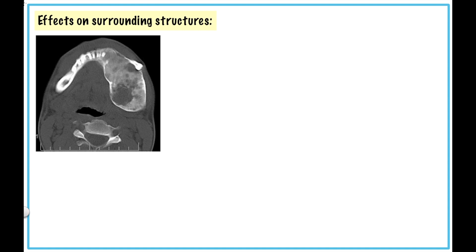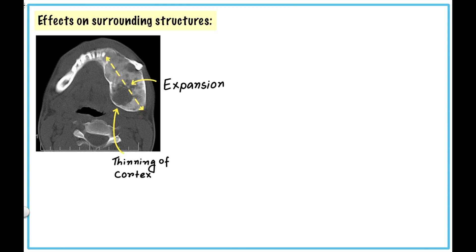Now let's discuss the effects on surrounding structures. Small lesions have no effect on surrounding structure. Fibrous dysplasia typically causes enlargement of the bone from within, which can cause a ribbon-like thinning of the cortex. Expansion of the bone is even along its length, rather than the more concentric expansion seen with benign tumors.